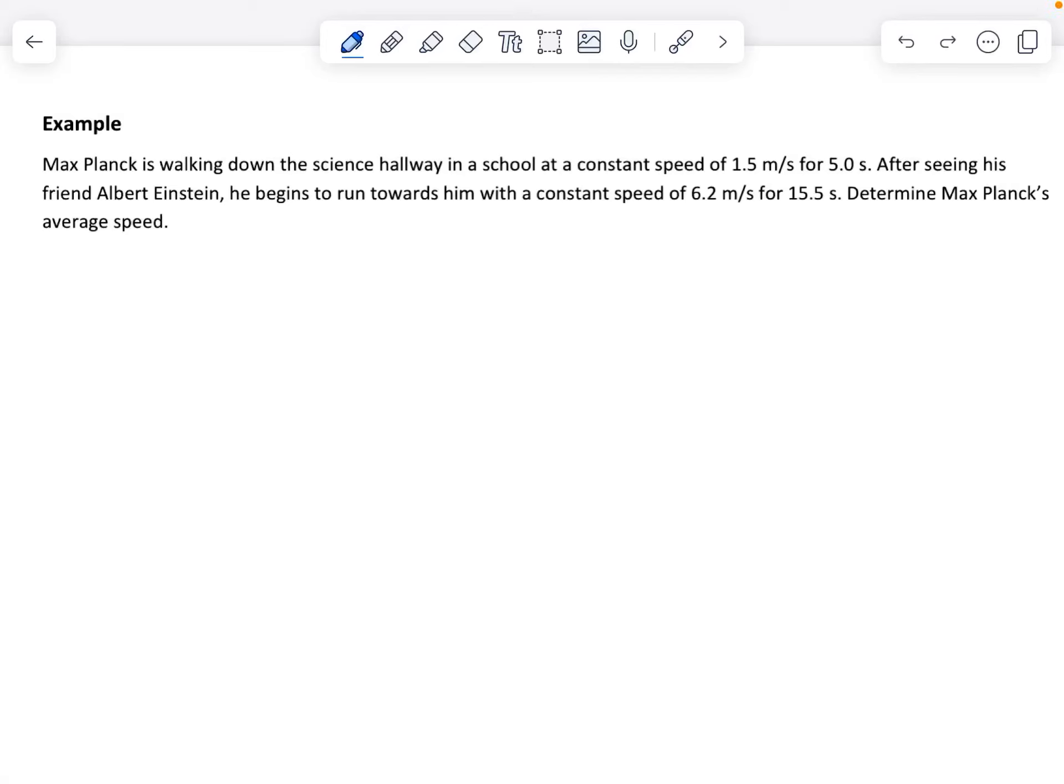This video we're going to go over an example question where we've got multiple speeds occurring. So in this question it says Max Planck is walking down the science hallway in a school at a constant speed of 1.5 meters per second for five seconds. After seeing his friend Albert Einstein he begins to run towards him with a constant speed of 6.2 meters per second for 15.5 seconds. Determine Max Planck's average speed.